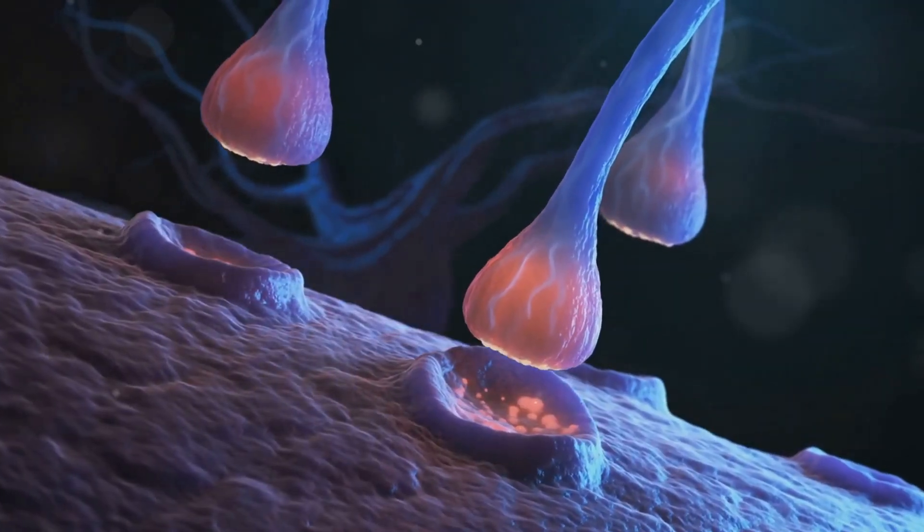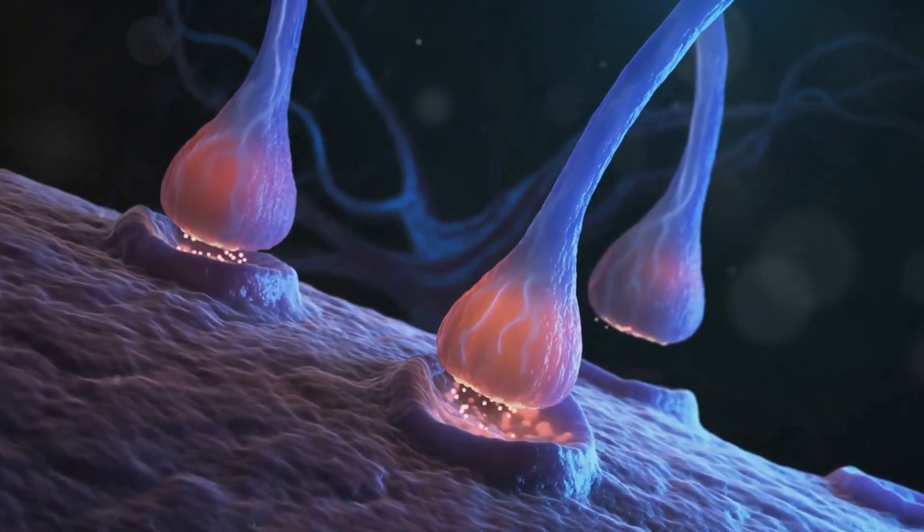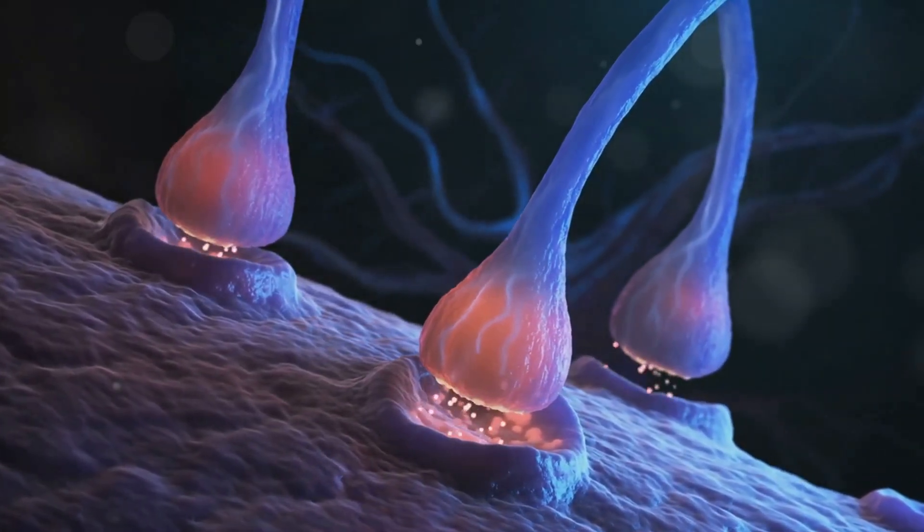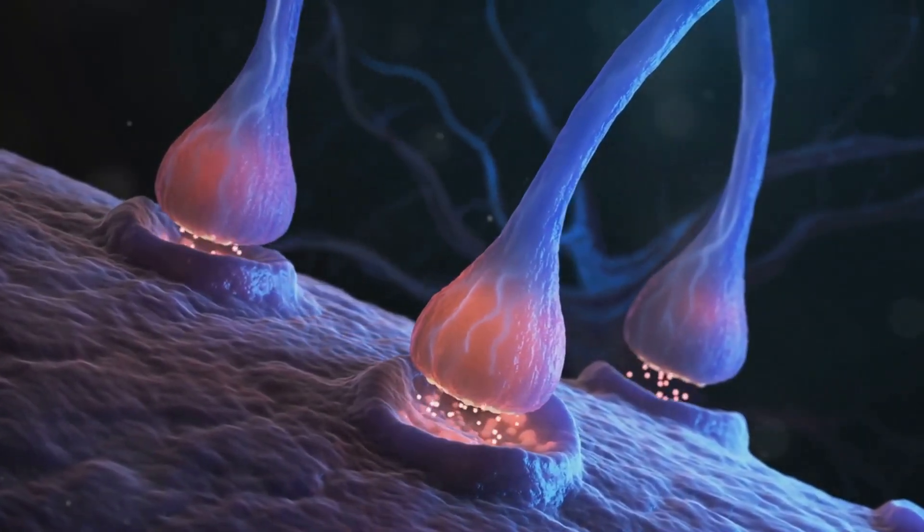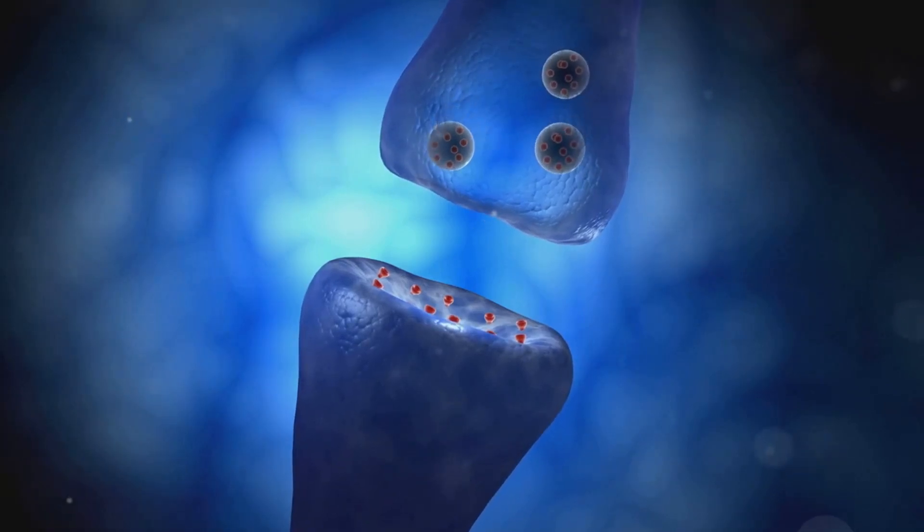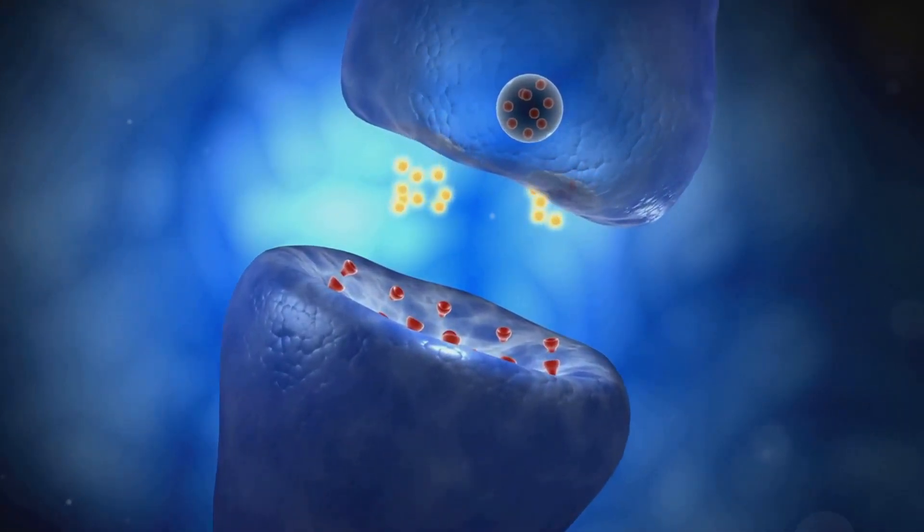Gut bacteria communicate with the brain through various mechanisms, including the production of neurotransmitters such as serotonin, dopamine, and GABA, which play crucial roles in regulating mood, sleep, and cognition. In fact, a significant portion of our serotonin, a key mood-regulating neurotransmitter, is produced in the gut.